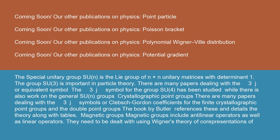Crystallographic point groups: there are many papers dealing with the 3J symbols or Clebsch-Gordon coefficients for the finite crystallographic point groups and the double point groups. The book by Butler references these and details the theory along with tables.